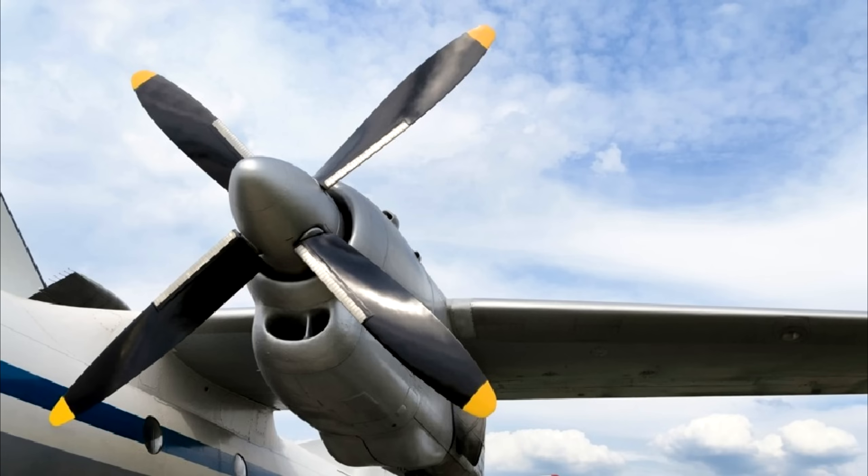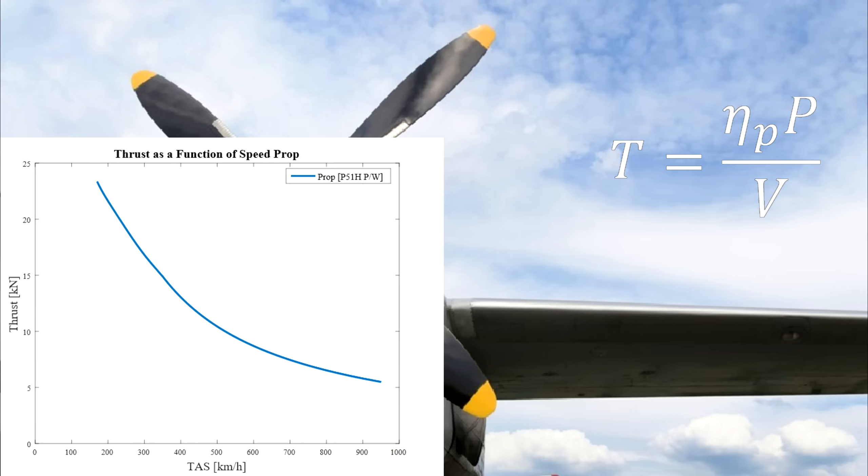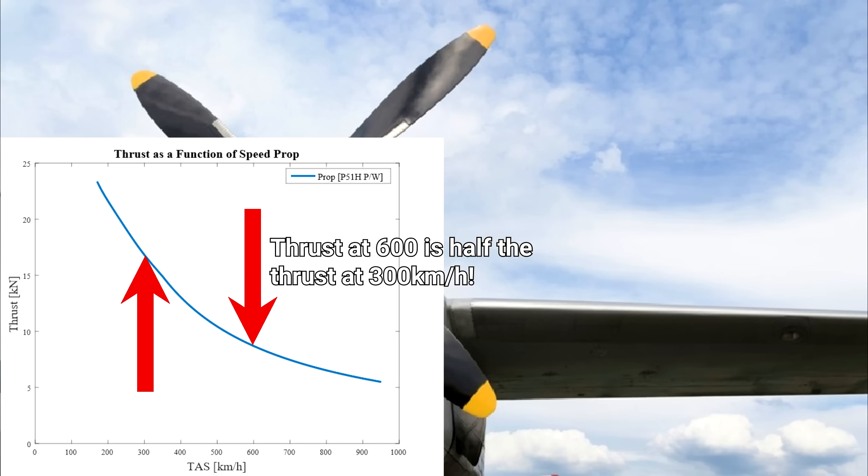Time to talk about a basic but important equation. Power is converted into thrust through the following equation. Thrust is equal to prop efficiency times power divided by the speed of the aircraft. This means that thrust decreases as speed increases for a given power, as you can see on this graph of the P-51H engine thrust as a function of speed. So if speed doubles, the thrust from a piston engine is halved.